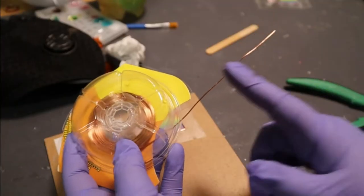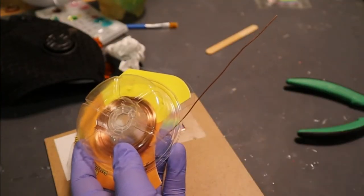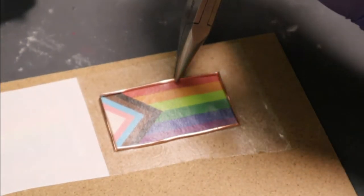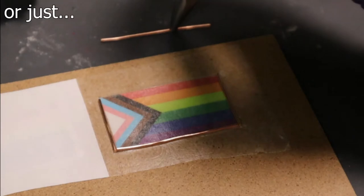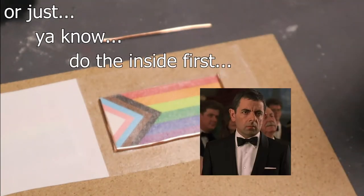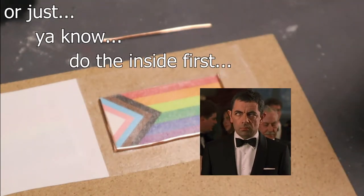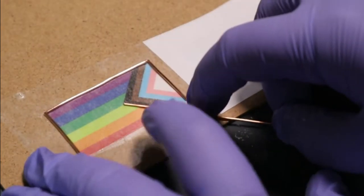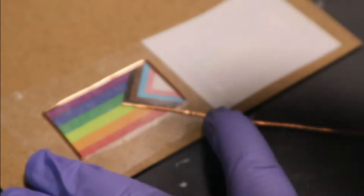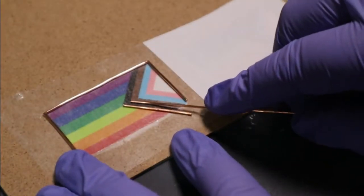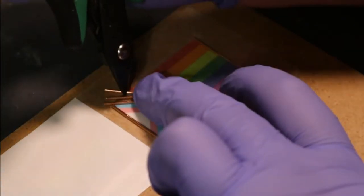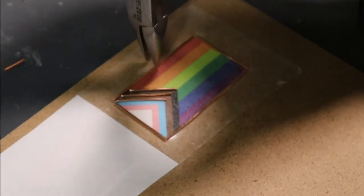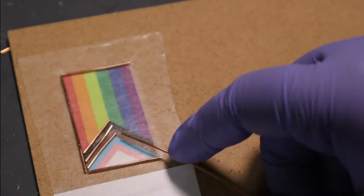We'll use 20 gauge wire for the inside lines of the flag. Remove the outside wire for better access to the inside of the flag. Carefully place the 20 gauge wire on the dividing lines between the colors. Put the wire back in place and then go ahead and repeat this process for the other three sides.